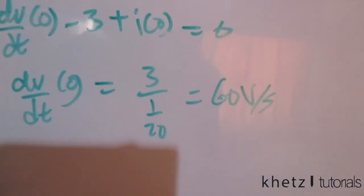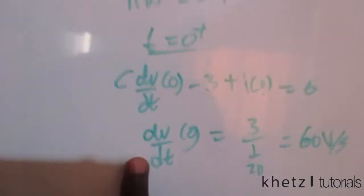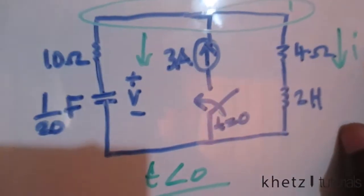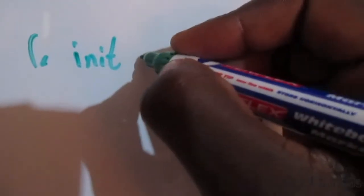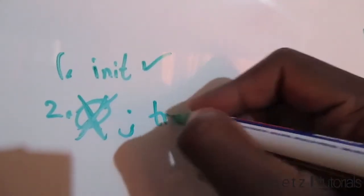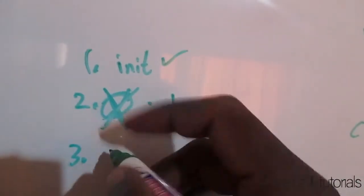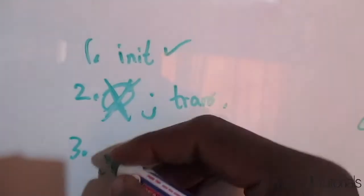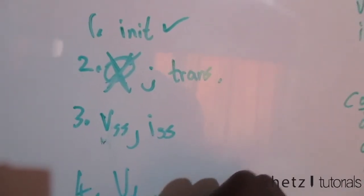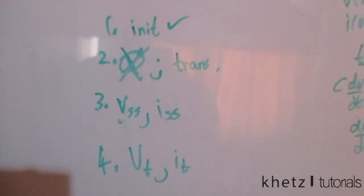We now have two initial conditions. Let's revise the four steps for general second-order circuits. Step one: find initial conditions — done. Step two: turn off independent sources and find the form of the transient response. Step three: obtain the steady-state values. Step four: find the total response.